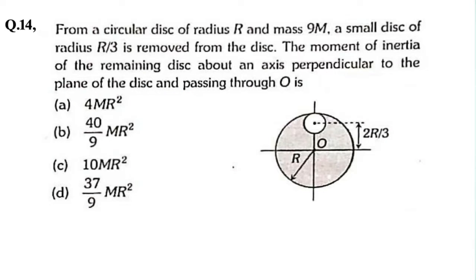From a circular disk of radius r and mass 9m, a small disk of radius r/3 is removed from the disk. The moment of inertia of the remaining disk about an axis perpendicular to the plane of the disk and passing through O is?